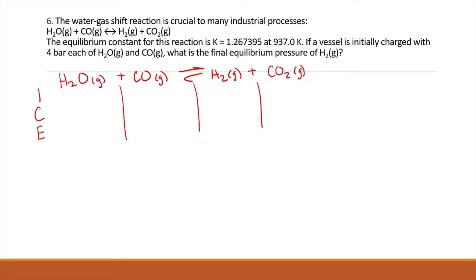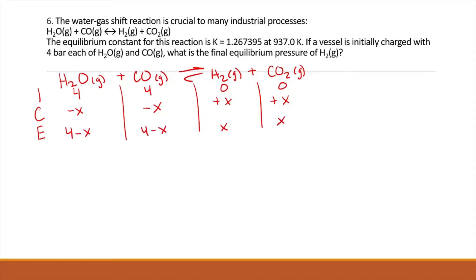We're told we started with 4 bar each of both water and CO, and we don't have any H2 or CO2 to start. We're losing some X from water, losing some X from CO, gaining X from hydrogen, and gaining X of CO2. So at equilibrium we have 4 minus X, 4 minus X, X, and X.